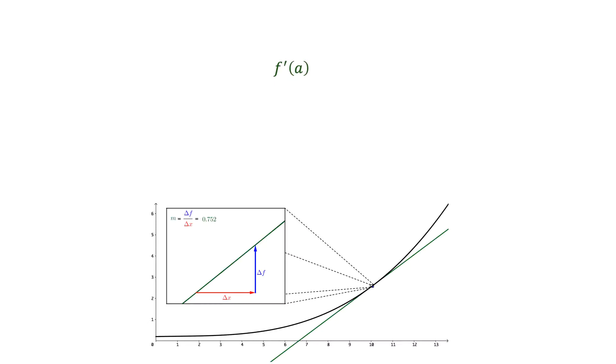As delta x got smaller, the graph of the function f looked more and more like a straight line. When delta x is this small, we refer to delta f as df and delta x as dx. The value of the derivative of f evaluated at a is the slope of this tangent line, which is the ratio of df and dx.